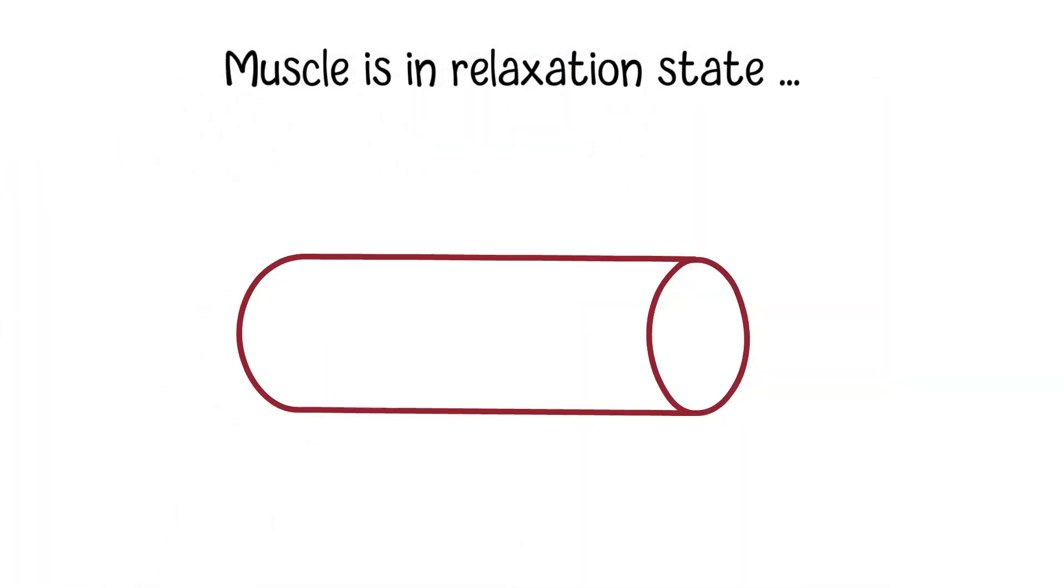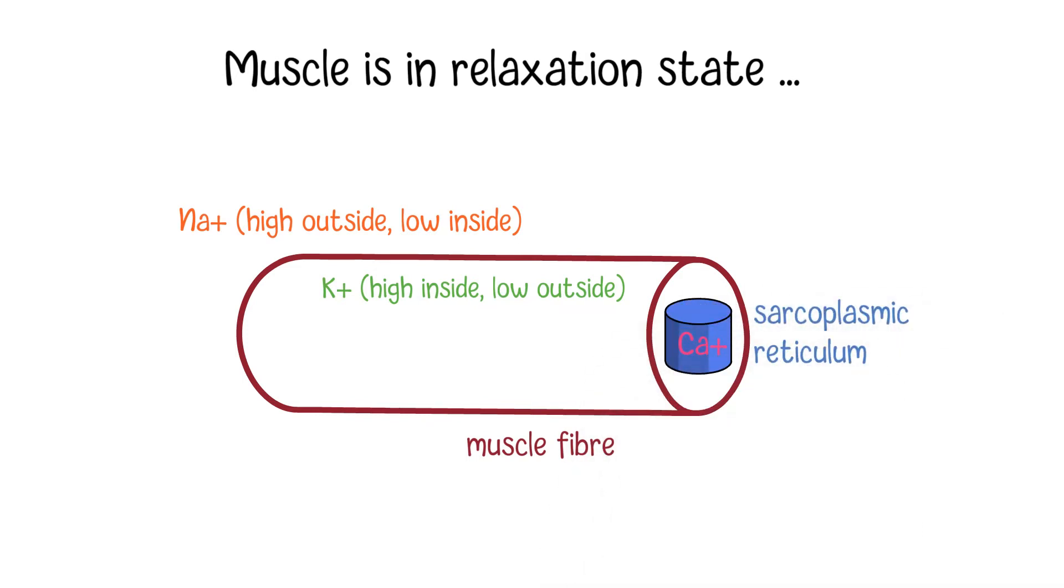When the muscle is in the relaxation state, sodium is in higher concentrations outside of muscle cells than the concentrations inside the cell. In comparison, potassium is in higher concentrations inside of the cell than outside. As mentioned, calcium is in high concentrations in the sarcoplasmic reticulum in the relaxed state.